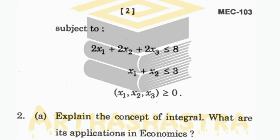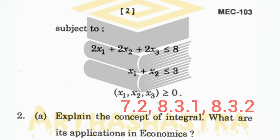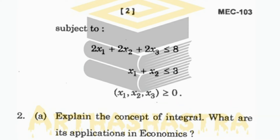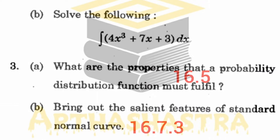Coming to question number 2 — this is from Block 3, Unit 7 and Unit 8. Part A is a theory question; you can refer sections 7.2, 8.3.1 and 8.3.2. Part B is a simple numerical question; refer Unit 7 for its solution. Question 3 is from Block 5, Unit 16 — a complete theory question. For Part A refer section 16.5.